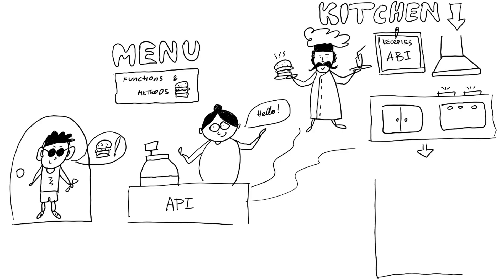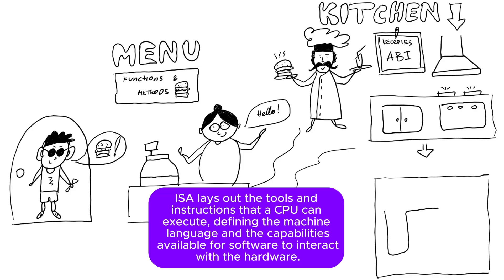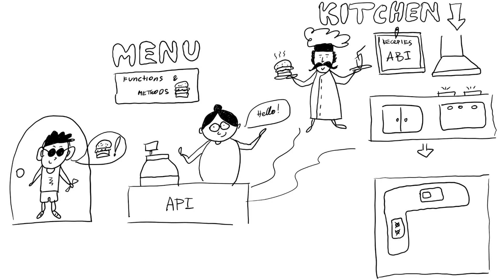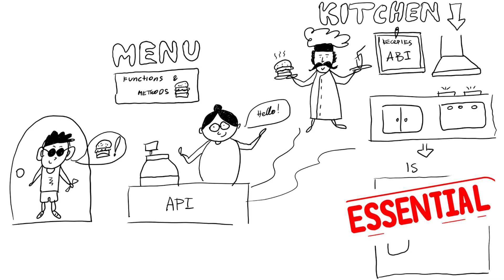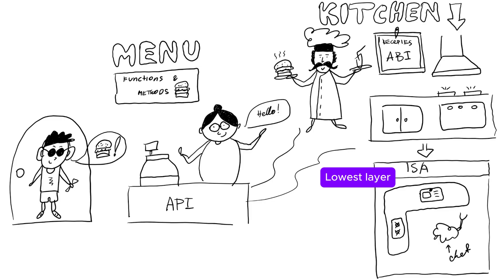Now, what's the ISA? Think of the ISA as the kitchen blueprint — it lays out the tools, layout, and structure the chef needs. Just like a chef needs to know what the stove and sink are and how they work, software relies on the ISA to execute instructions correctly. The ISA provides the fundamental instructions for hardware to process and is essential for both API and ABI. It deals with specific instructions a processor can handle, how they are encoded, and how the processor interacts with memory and registers. It's the lowest level of abstraction — the foundation that both the API and ABI rely on to function.